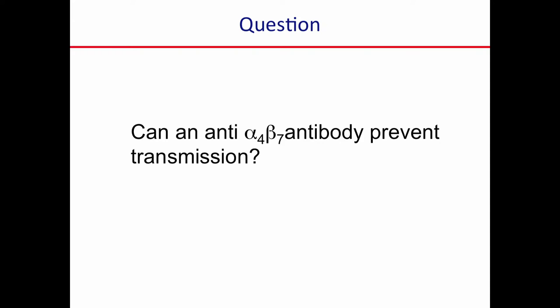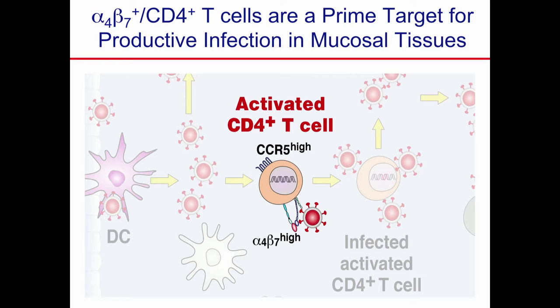So if you remember, I started out by asking whether the anti-alpha 4 beta 7 antibody can prevent transmission — the answer is yes, it can. We had this idea that one very simple explanation for why HIV is a gut-tropic virus is that it infects cells that are going to home to the gut. That's what we're showing here: alpha 4 beta 7-high cells tend to be activated, they express lots of CCR5, and the virus likes to replicate in these cells. That's why we think the virus is homing to the gut, regardless of the route of infection.